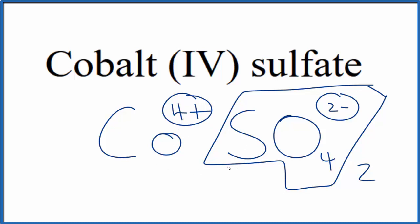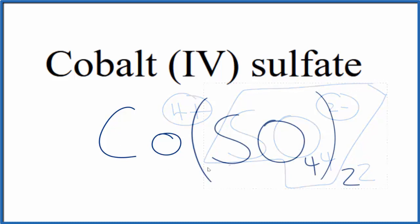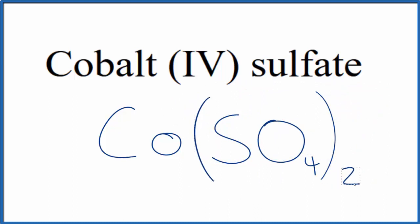We would need to put parentheses around the sulfate. So our parentheses show that we have two of these sulfate ions and one cobalt(IV) ion. If you were given this formula and asked to write the name, you know that sulfate is 2- and you have two of them, so you'd need 4+ for the cobalt. That's why you write the IV up here.